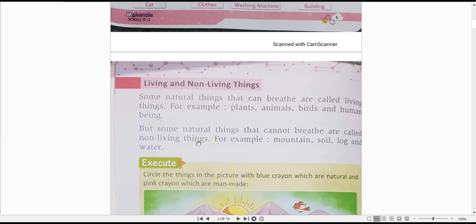Non-living things. Kuch is tarah ki prakartik chizhe bhi hai joh saans nahi leti aur samay ke sath grow up nahi kerti. Jaysay for example mountain, soil, log, and water. Toh is tarah ki chizho ko hum kya kehenghe non-living things.